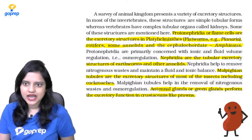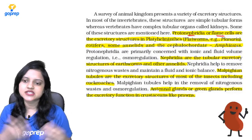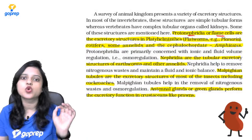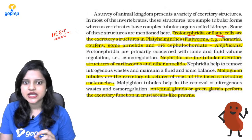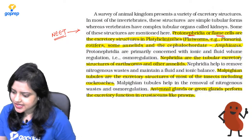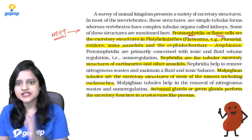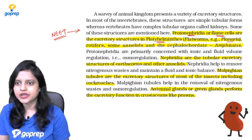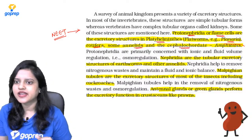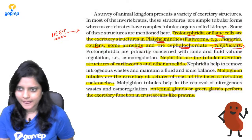There are different kinds of excretory organs in various organisms. Some have flame cells, also known as protonephridia — this is a NEET question. Protonephridia or flame cells are the excretory organs in platyhelminthes, for example planaria, rotifers, some annelids, and cephalochordata — very importantly, amphioxus. Please underline this in your NCRT.